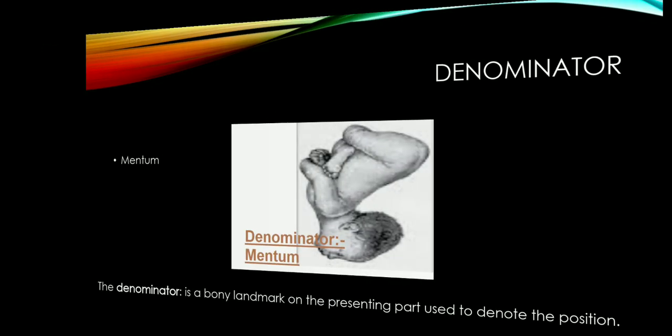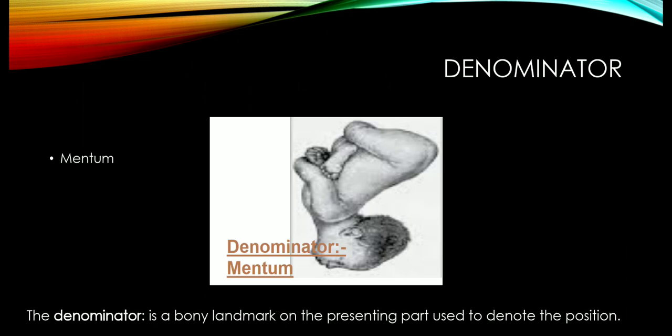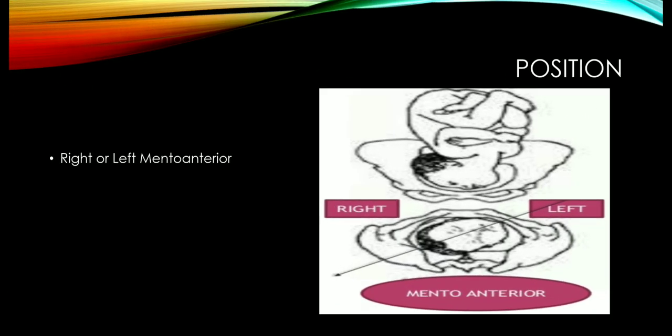The denominator in the case of face presentation is the mentum. The denominator is basically a body landmark on the presenting part which is used to denote the position of the baby. The position in face delivery may be right or left mento-anterior. The mentum may be on the right side or on the left side — it can be on any side. Initially it is right or left mento-anterior; that is the basic position.